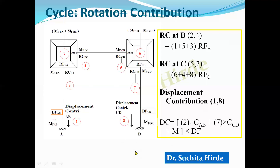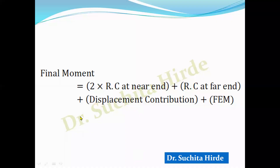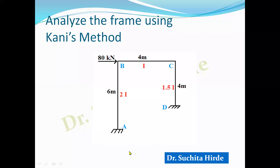After completing cycles until convergence, calculate final moments using: final moment = 2 × (rotation contribution at near end) + (rotation contribution at far end) + (displacement contribution) + (fixed end moment). For columns, include displacement contribution; for beams, displacement contribution is not included. Now let us solve a numerical example: a portal frame subjected to a nodal point load of 80 kN with both supports fixed and different values of flexural rigidity.